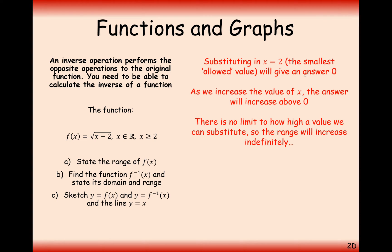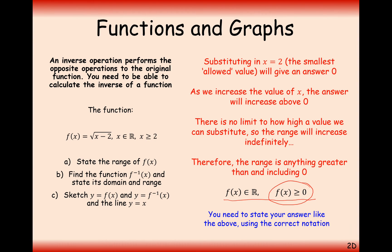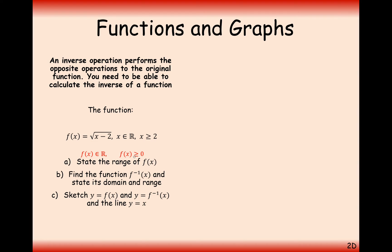Substituting in x equals 2, the smallest allowed value, gives an answer of 0. Since this is an increasing function, it will always go above 0, and there is no limit to how high the values can be. So the range increases indefinitely — the range is f of x is greater than or equal to 0. The square root of infinity is still infinity, and the minimum point at x equals 2 gives 0, confirming f of x is greater than or equal to 0.